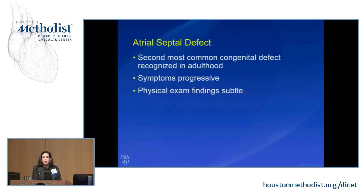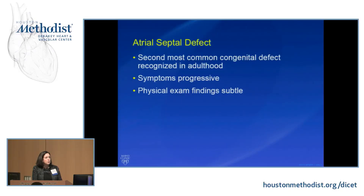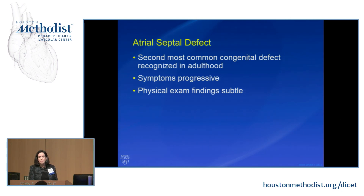Atrial septal defects are a really important defect to consider when we're thinking about the adult with congenital heart disease, because this is actually the second most common congenital heart defect that's recognized for the first time in adulthood — meaning that you can escape childhood without this diagnosis but have a pretty significant lesion. The symptoms are quite progressive and subtle, and the physical exam findings are really quite hard to sort out in the exam room. Hearing a fixed split of the second heart sound is not so easy in a five-year-old who's squirreling around on the exam table, so ASDs are often first diagnosed in adulthood.